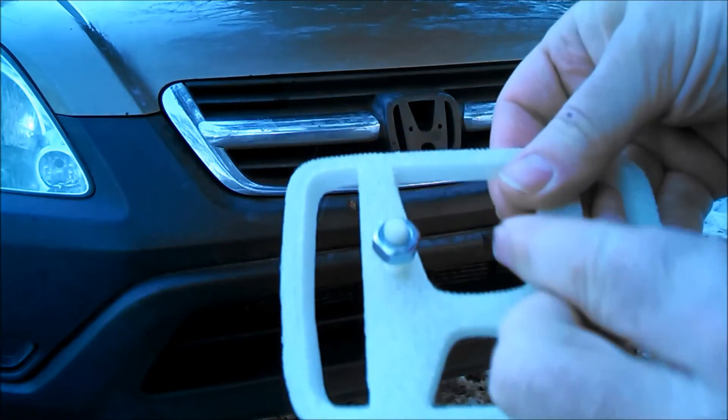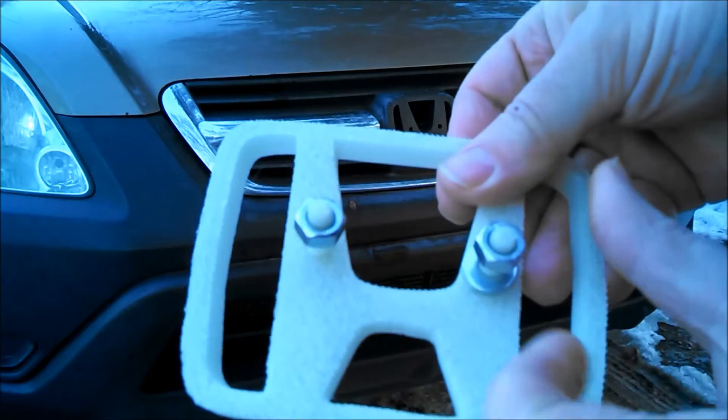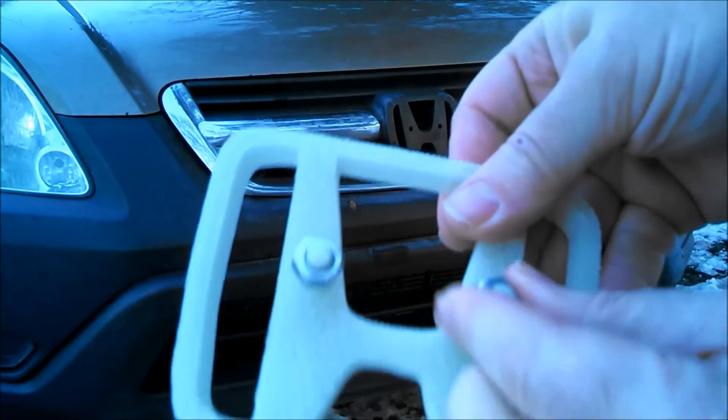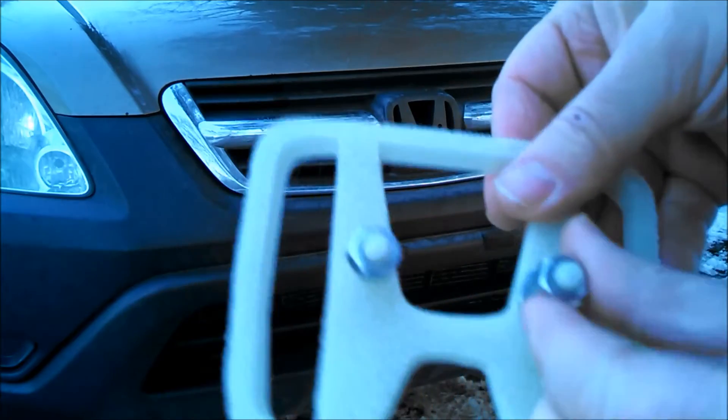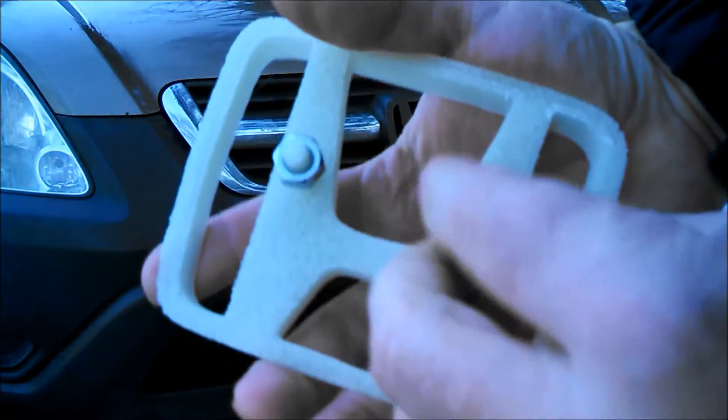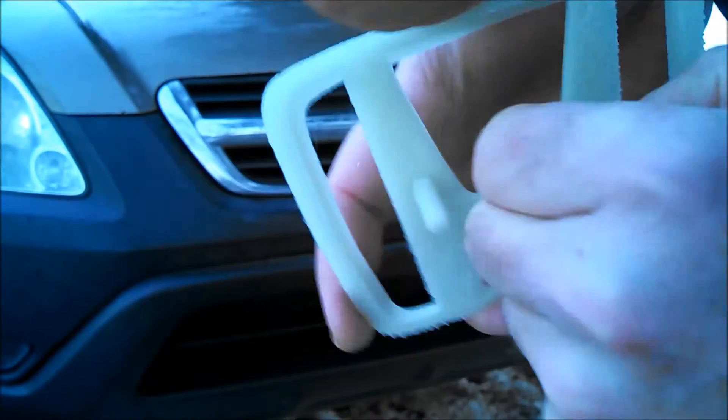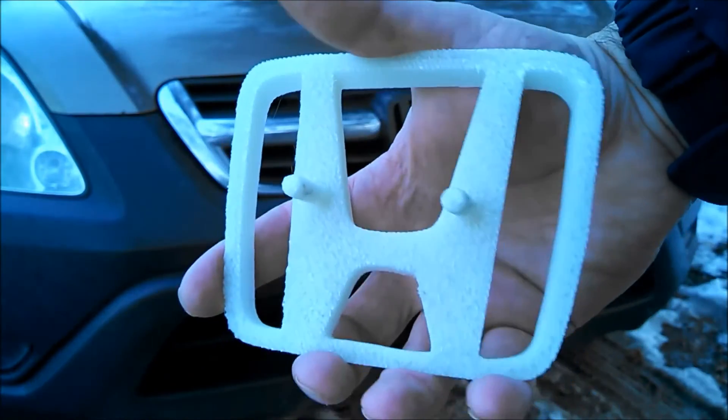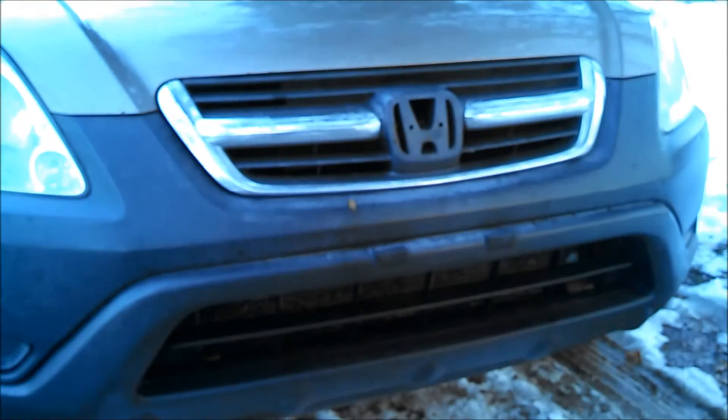So I got my piece and I got some, I believe these are M8 coarse thread nuts here on this guy. And then I got some washers to put it on from the back. Basically I'm gonna take these off. And now that I have it off, now I can put it on my vehicle here.